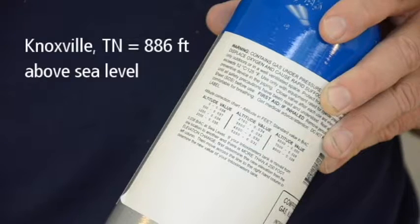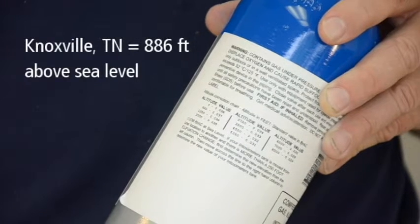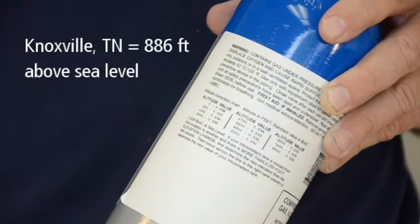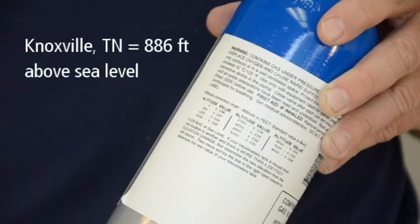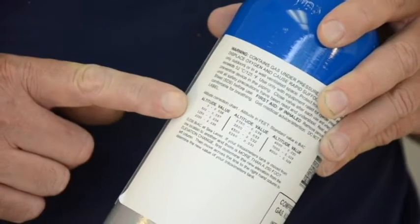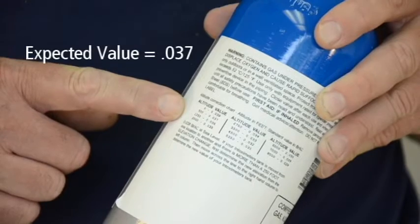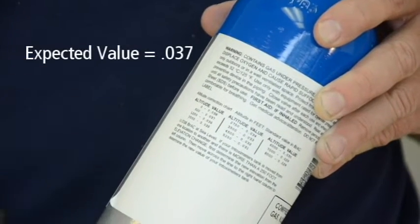For example, if you are performing an accuracy check in Knoxville, Tennessee, which has an altitude of 886 feet above sea level, the altitude chart shows the expected value of the alcohol gas tank to be .037.